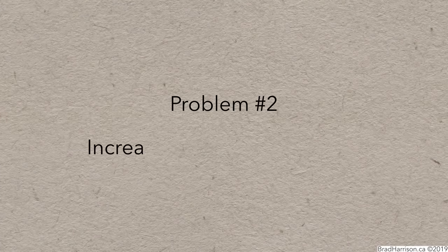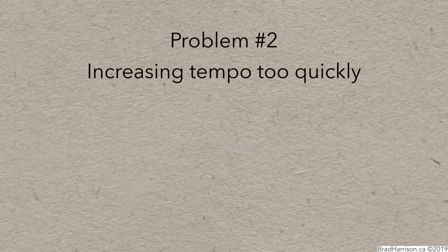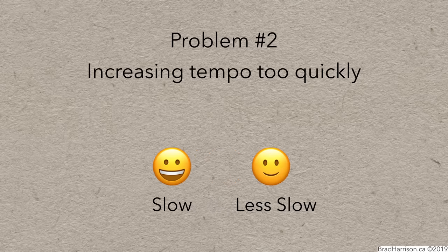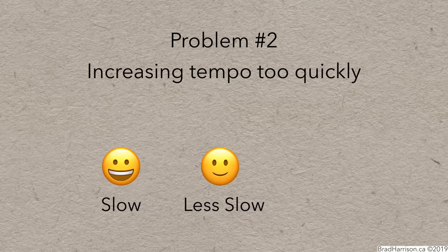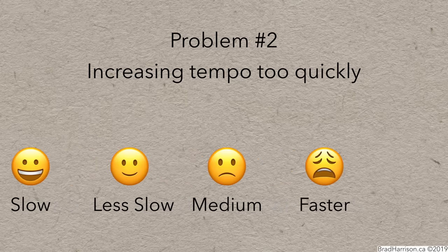The second problem is increasing tempo too quickly. Let's say you do start at a slow tempo and you play the passage pretty perfectly, but then increase the tempo a bit too ambitiously, and you play it a little less perfectly. But you don't worry about the minor errors and carry on increasing the tempo. Predictably, the errors only get worse at faster tempos. Eventually, you can't increase the tempo anymore because you're just making too many mistakes.